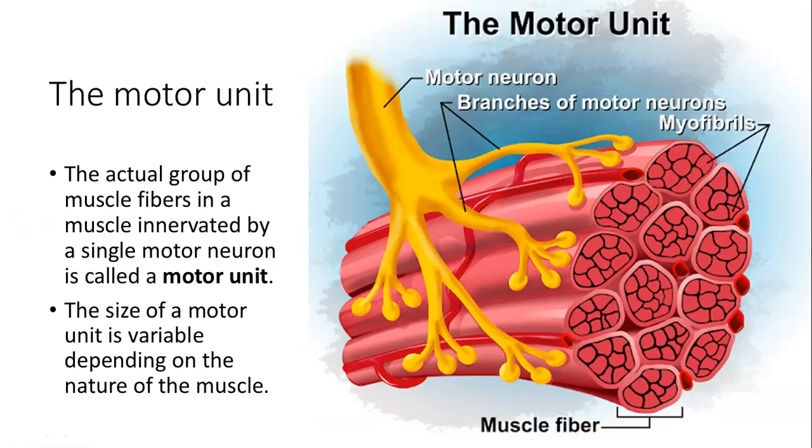The next thing I want to talk about is the motor unit. A motor unit is the actual group of muscle fibers in a muscle that are innervated by a single motor neuron. That entire thing is called a motor unit.